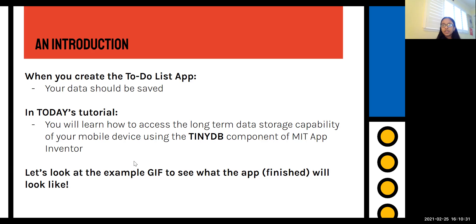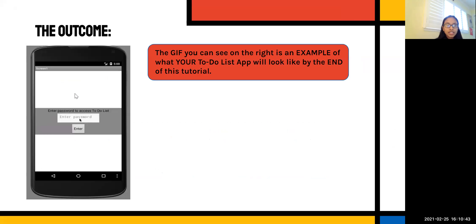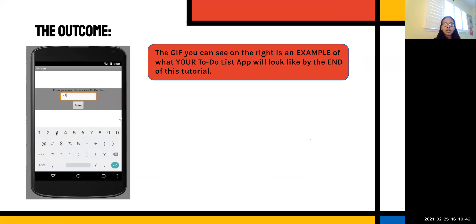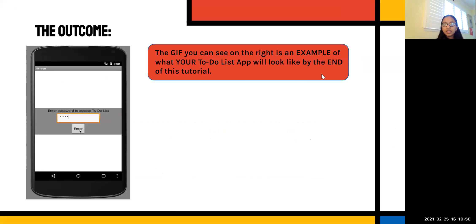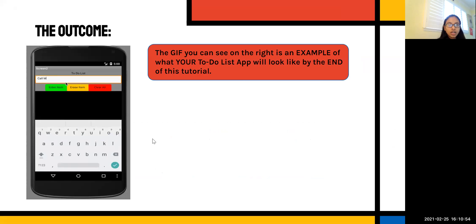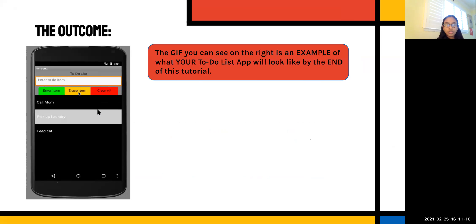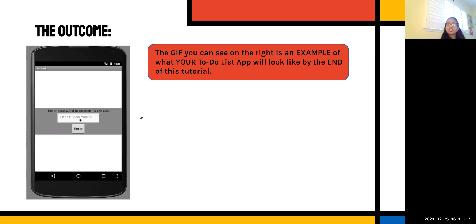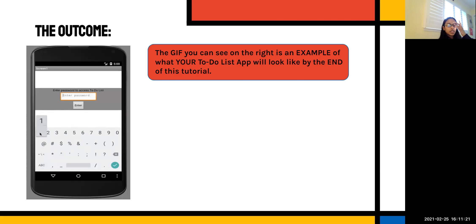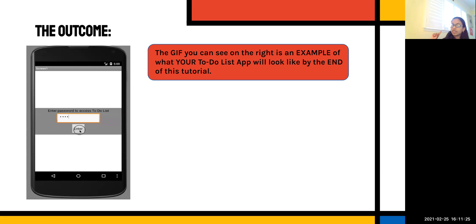The next slide has a GIF showing what the finished app will look like and what you can do once you're finished. The user is entering tasks like 'call mom' and 'pick up laundry.' If they click erase item or clear all, it'll do different things. You can use the clear all feature when you want to erase everything, and erase one when you only want to remove a single task — basically when you've finished it.